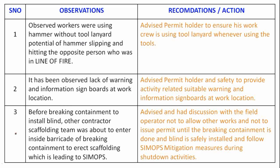Observation 1: Observed workers were using a hammer without a tool lanyard, with the potential of the hammer slipping and hitting the opposite person who was in the line of fire. Recommendation: Advise the permit holder to ensure his work crew is using tool lanyards whenever using tools at top elevation.